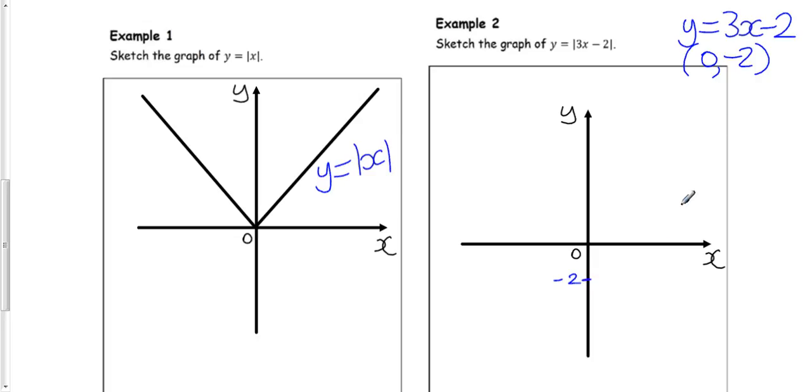Where would it cross the x-axis? Well, when y was 0, we get 3x minus 2 equals 0, and by rearranging this, we'd get x is 2 thirds. So the graph would cross the x-axis at 2 thirds 0, and cross the y-axis at minus 2.